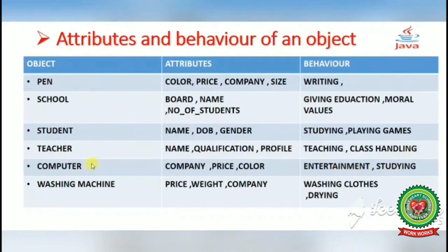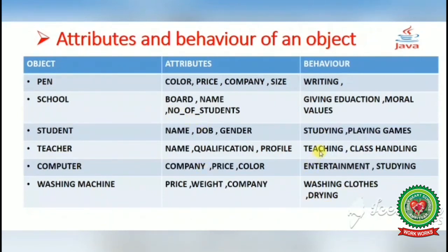The next example is a washing machine. Its attributes are price, weight, and company. The behavior, as discussed earlier, is washing clothes and drying. So these are the different attributes and behaviors of different objects.